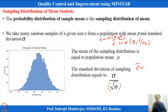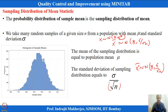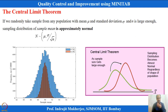x-bar follows a normal distribution with the same mean, and only sigma changes to σ/√n. Because we are taking the average, we are smoothing out fluctuations and variability will be less. So σ/√n is the formulation statisticians have given us.